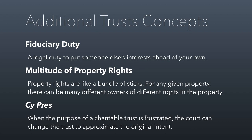The last concept is cy pres. This is where a charitable trust's purpose has been frustrated after the settler has died. For example, I might dedicate property to BYU, but then BYU might cease to exist someday. Since I'm long dead, a judge can step in and find another university that's close enough to BYU to fulfill the original settler's intent. If the court can't find a close enough approximation, it will dissolve the trust. Cy pres allows a court to alter a trust when the original purpose has been frustrated by circumstance.